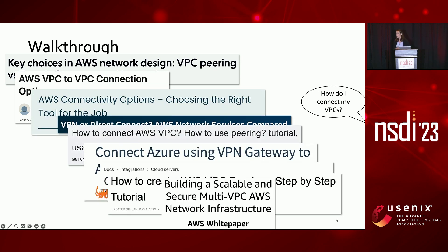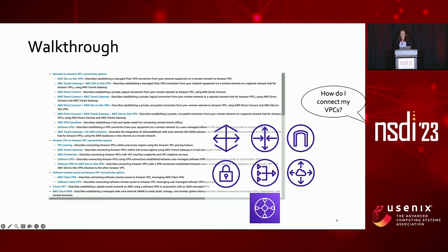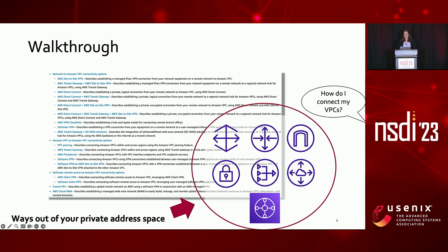Even consulting the first-party documentation for AWS on how to connect your VPC to other networks will produce a long list of options, and the virtual gateway or link used to build this connection could be any one of these available abstractions. The choice will depend on things like security requirements, your remote target, whether the address spaces are overlapping, and more. Ultimately, all of these abstractions are different ways to get out of your private address space and connect to others on the internet.